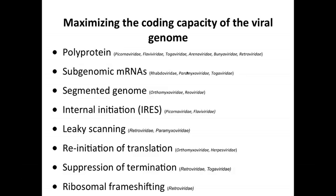How do you maximize the coding capacity of the viral genome so you can make more than one protein? You don't want to be limited by this monocistronic rule. Here are the different ways that viruses do it — the different mechanisms and which virus families use them. Making a polyprotein is a good way to make many proteins from a single mRNA. Examples include the Picornaviridae and the Flaviviridae.